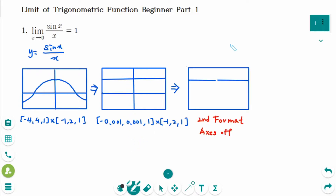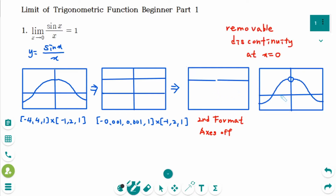Please go to the second format, then press axis off. You will see this graph. This means the graph of y equals sin x over x is like this, with a removable discontinuity at x equals 0.